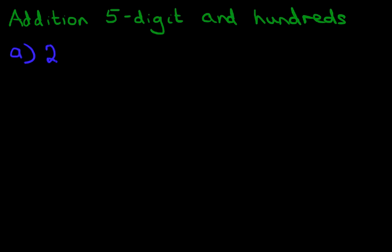What is 24,387 plus 100? Now I'm sure some of you, if not all of you, can do this just by looking at this question. However, we're going to do this using the vertical format. So the first stage is to rewrite this question into columns.